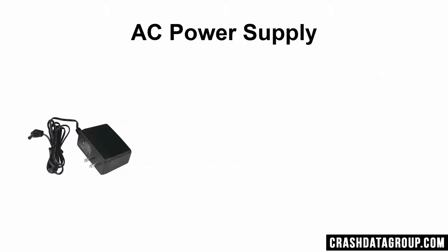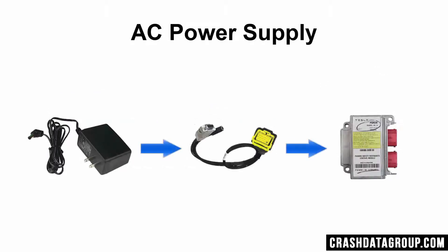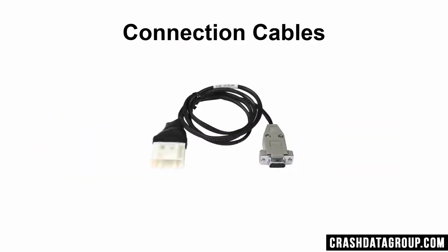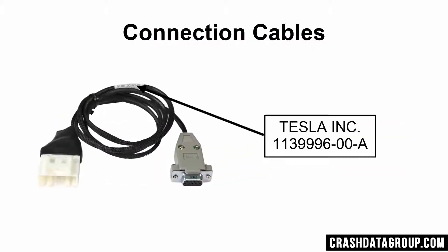The AC power supply is used to provide 12-volt power to an RCM when performing a direct-to-module download. In-vehicle and direct-to-module connection cables are identified by a part number contained on a label located on the cable. The seven-digit cable number on the label may be followed by several different version or production code numbers. Only the first seven digits are applicable for determining the proper cable to use.